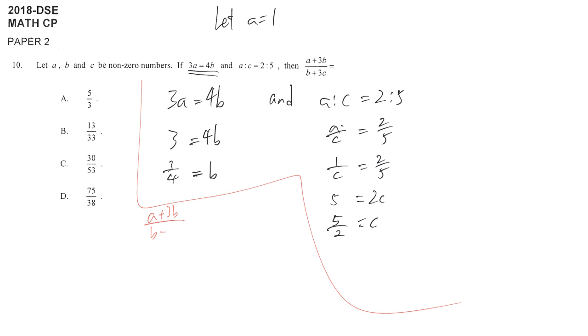over B plus 3C. Then we just simply replace every value: A is 1, 3 over 4, and then this is 3 over 4, and then plus 3 times 5 over 2. Then you just simply use your calculator to get